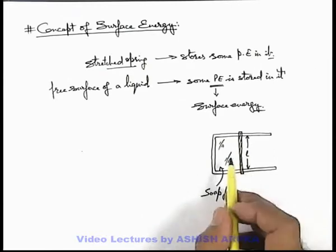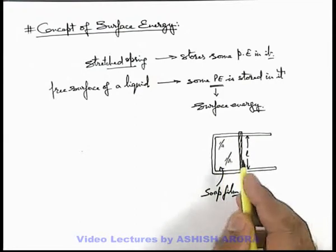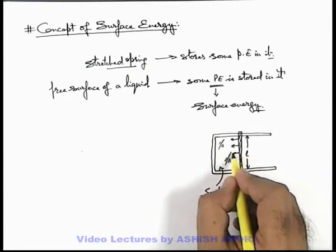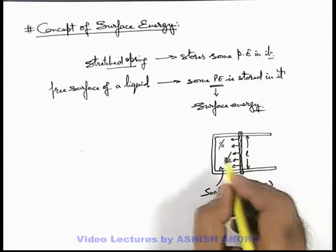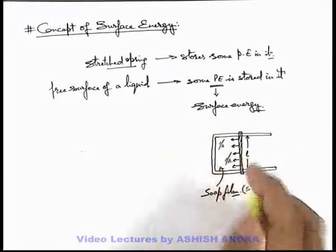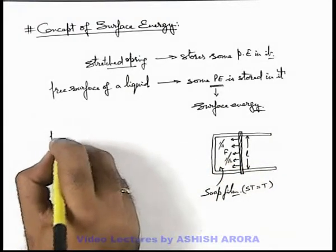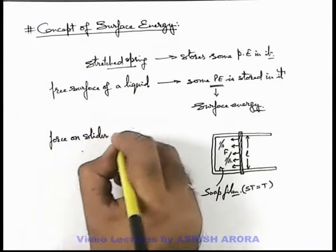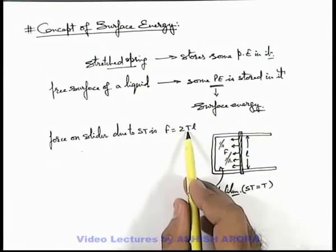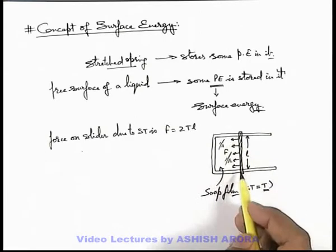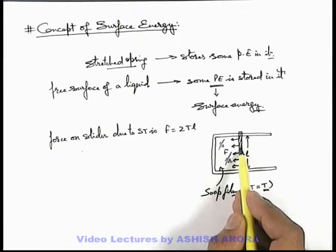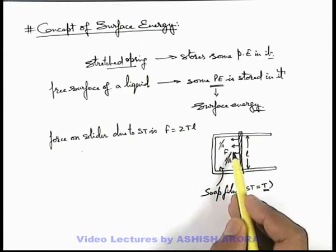Then obviously the soap film will act like a stretched membrane due to its surface tension. And if the soap film is having surface tension t, then this will exert a force on the slider in the leftward direction, as on the right side there is no liquid. On the left side of the slider there is a soap film. As the film is having 2 surfaces — one above the film and one below — the net force on the slider will be twice of t·l.